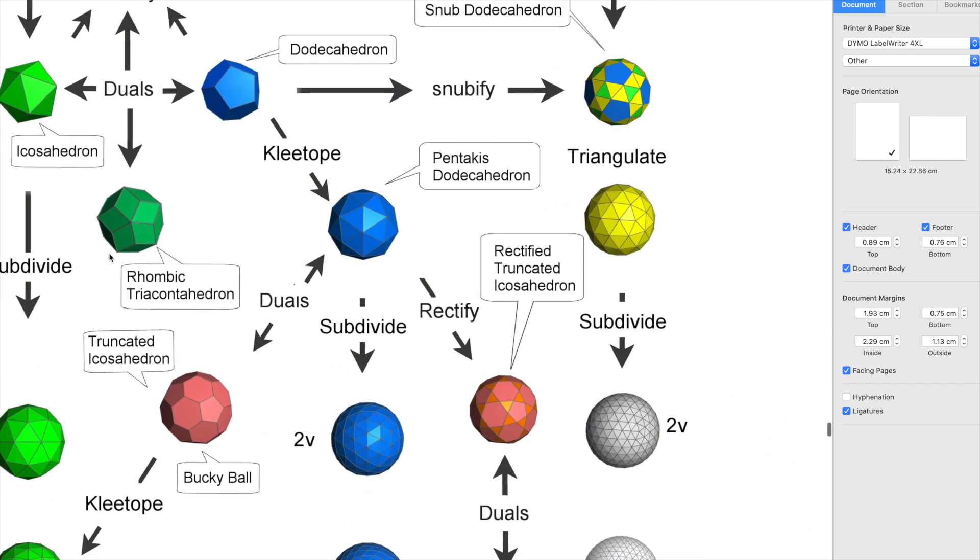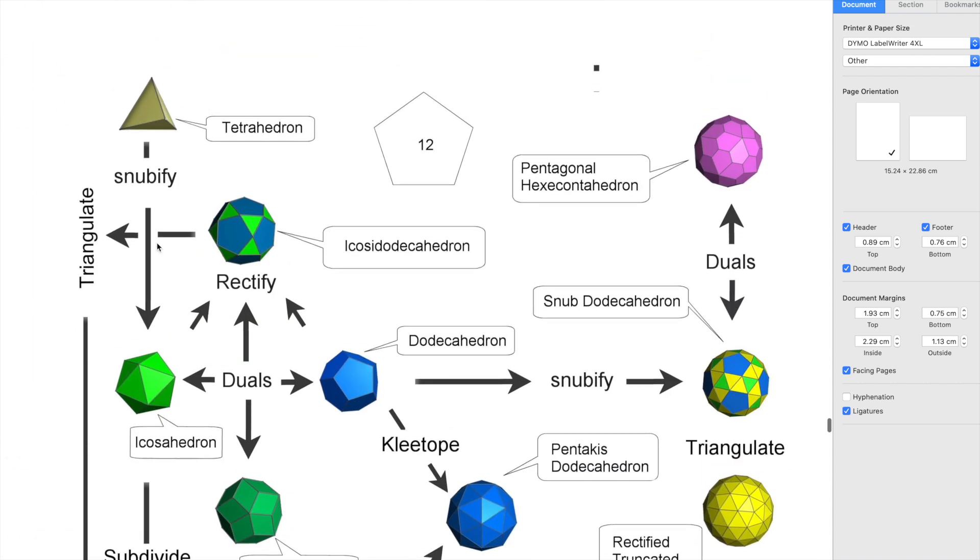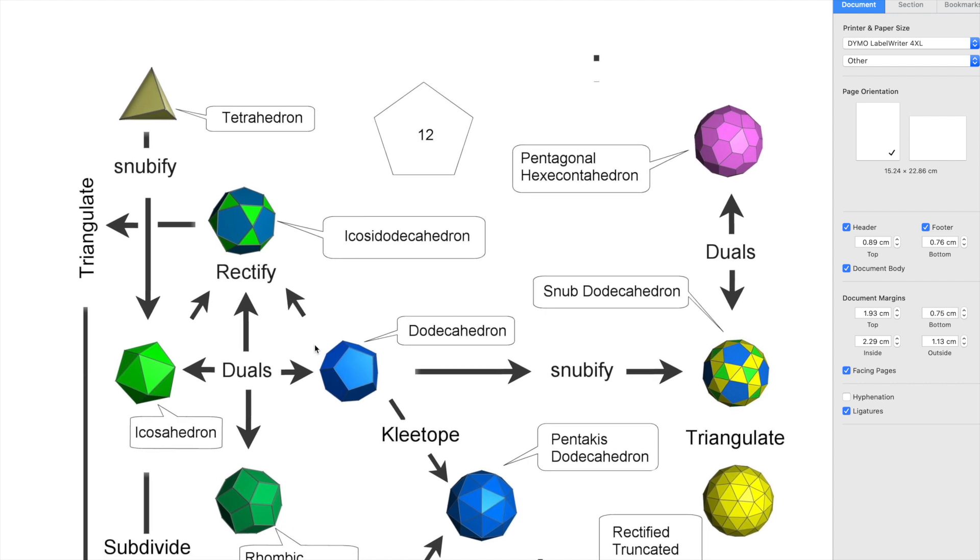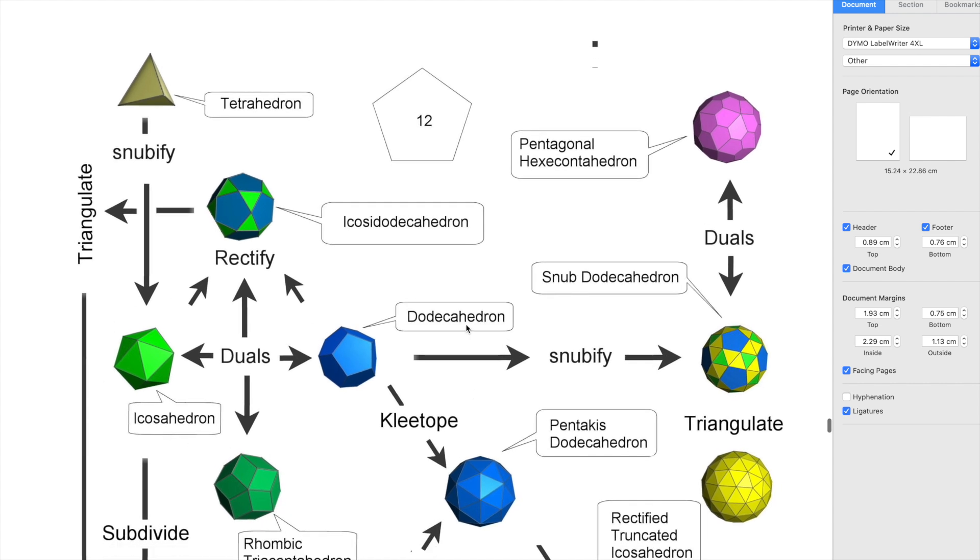If we move on to icosahedron and dodecahedron geometry, this is the family to that. If we look at the top tetrahedron, snubification gets you the icosahedron and the dodecahedron is the dual of that. So this is where most geodesic domes are made, they're either icosahedron or dodecahedron, but people mix them up and they can't tell the difference between one and the other.